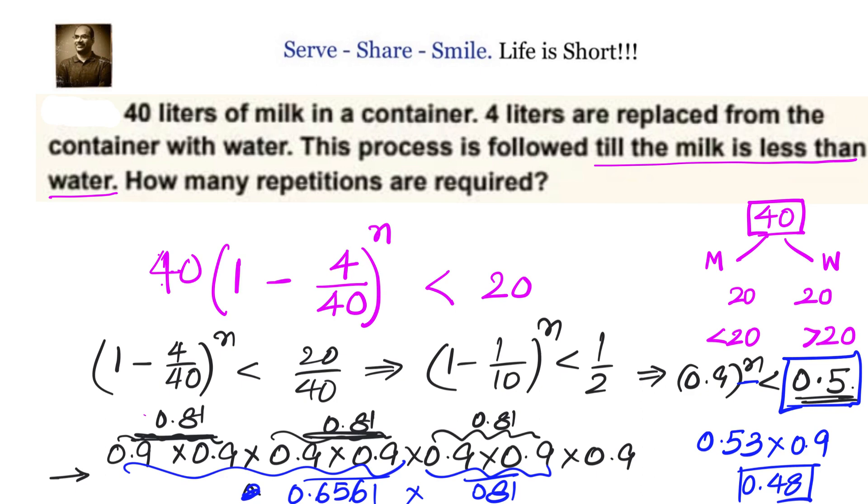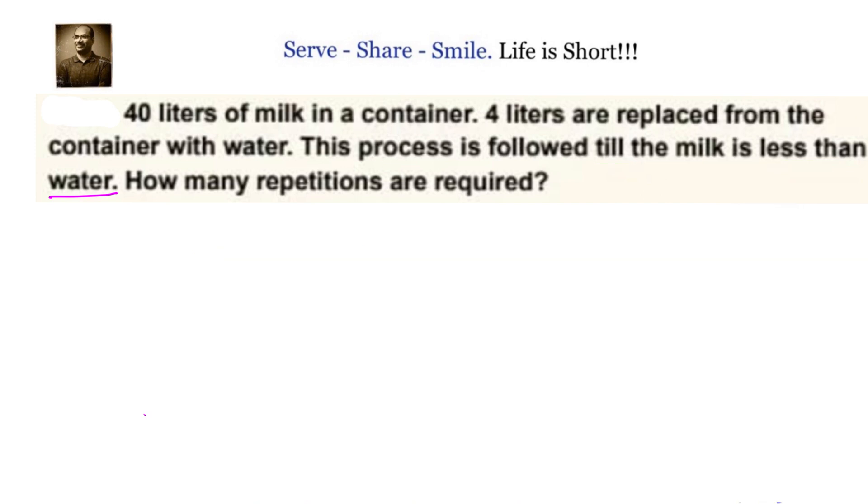After 7 repetitions, the milk quantity will be less than that of water quantity. Now, let us see how this formula is derived. By this time, we should have understood that the formula what we are going to derive is in geometric progression. Let us see why it is.